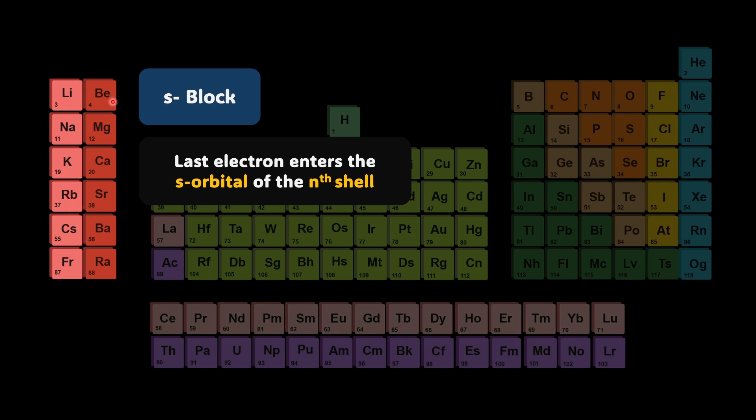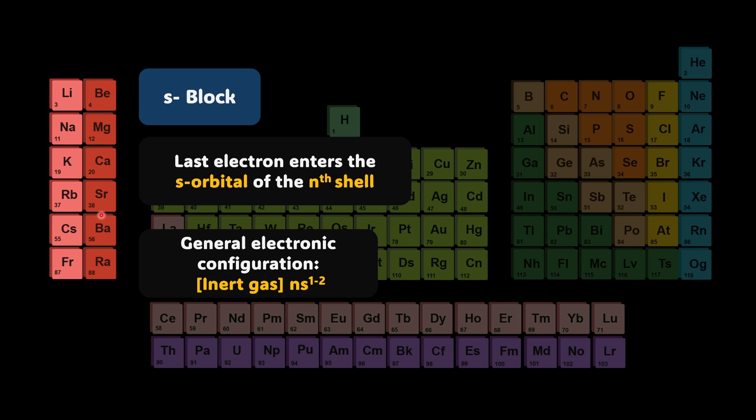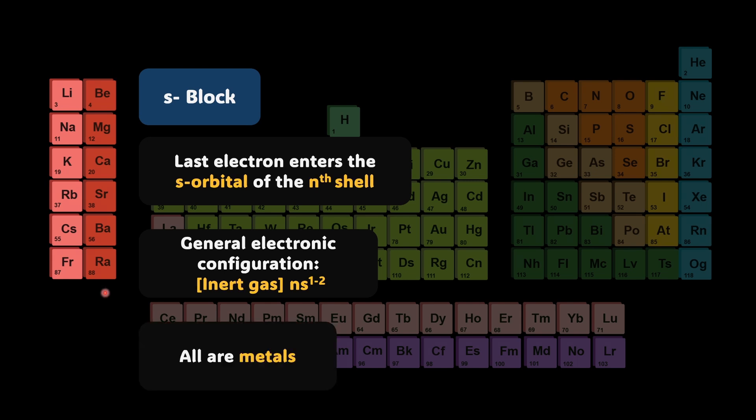Similarly beryllium is 2S2, magnesium is 3S2, calcium is 4S2 and so forth. The general electronic configuration is inert gas NS1 or 2. For group 1 it is NS1 and for group 2 it is NS2. All of these are metals because they love to lose electrons and become positive ions or cations.